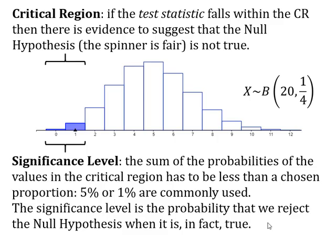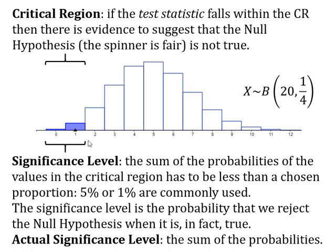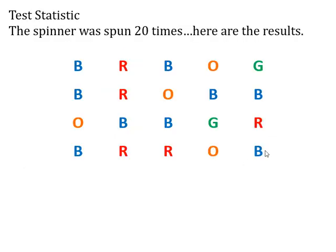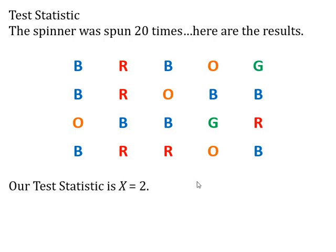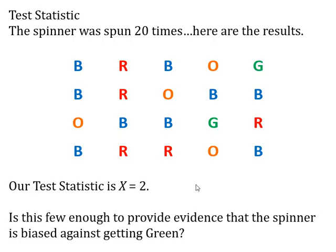One last thing: the actual significance level. We've said we want these probabilities to add up to less than the significance level — less than 5% or maybe less than 1%. The actual significance level is just what the sum of these probabilities actually are. So back to our example: the test statistic is the number of greens we got. Here we've got our results of the 20 spins and we got two greens, so our test statistic is X=2. That is pretty low. The question is: is this few enough to provide evidence that the spinner is biased against green? That is basically what we use a hypothesis test for.